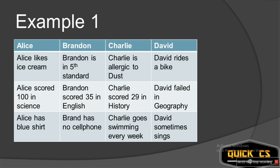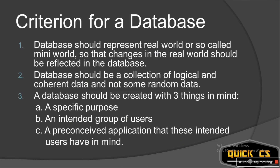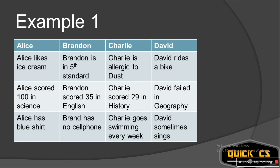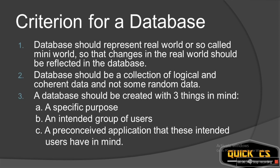Let's look at example one. We have information about Alice, Brandon, Charlie, and David: Alice likes ice cream, Brandon is in fifth standard, Charlie is allergic to dust, David rides a bike. Alice scored 100 in science, Brandon scored 35 in English, Charlie scored 29 in history, David failed in geography. Alice has a blue shirt and no cell phone, Charlie goes swimming every week, and David sometimes gets sick.